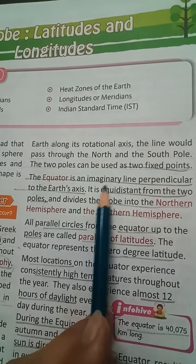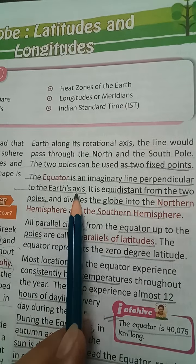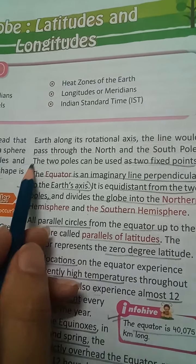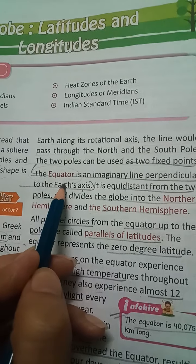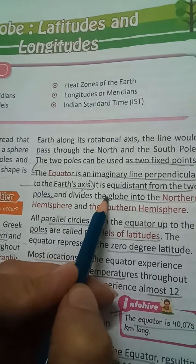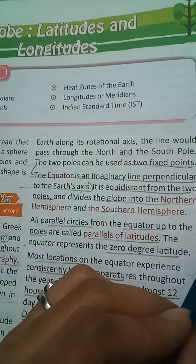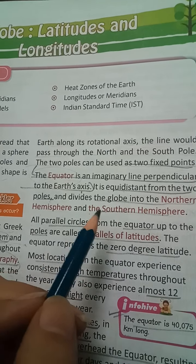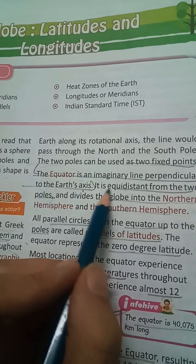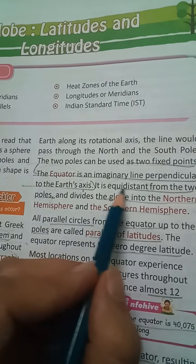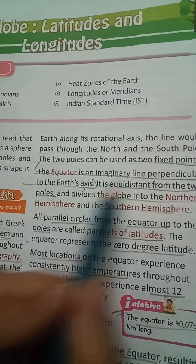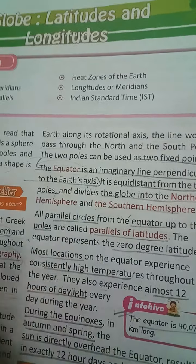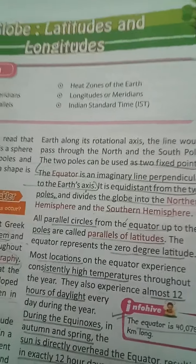The equator is an imaginary line perpendicular to the earth's axis. It is equidistant from the two poles — both the northern pole and the southern pole — dividing the earth into the northern hemisphere and the southern hemisphere.